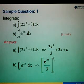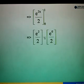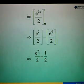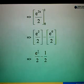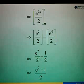Next, substitute the two limits into the expression. First, substitute x with 1 to get e squared over 2. Then minus, substitute 0 into x to get e to the power 0 over 2. Simplifying: e squared over 2 minus 1 over 2. Since the denominator is the same, we take out the 2, giving us (e squared minus 1) over 2 as the answer for part B.